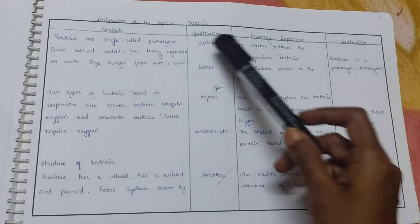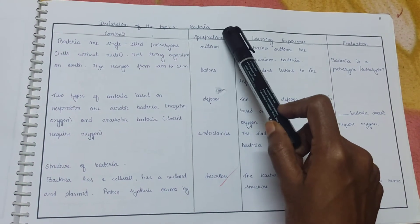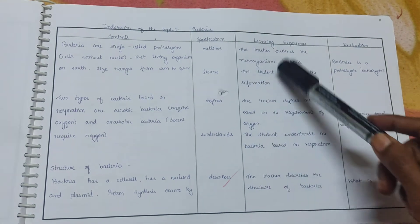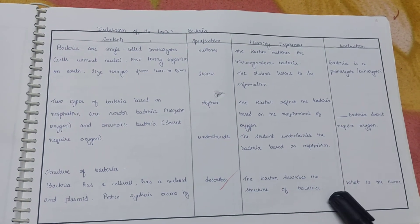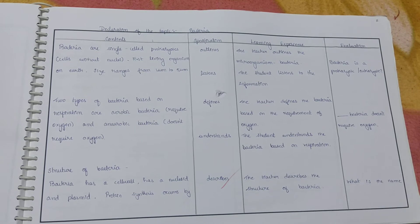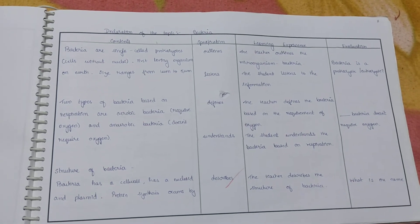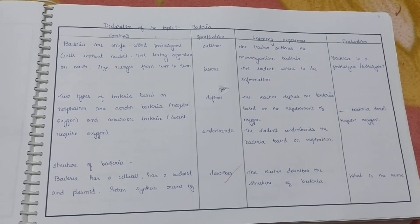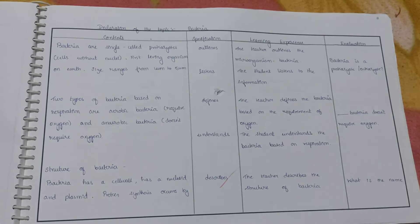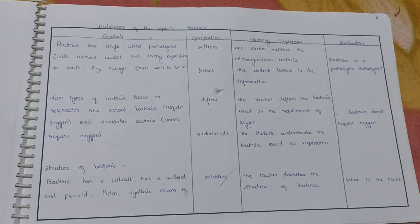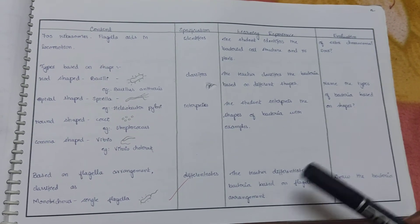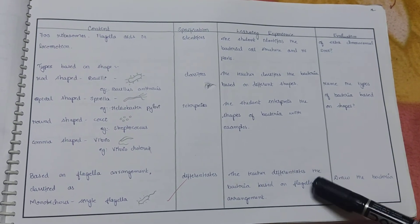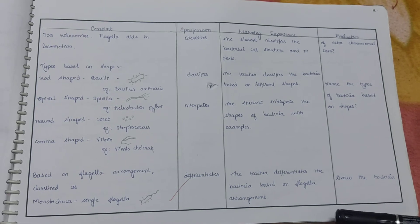For the declaration of the topic, you will have to write it as 'bacteria' — this is very important. Under that you can see my content specification, learning experience, and evaluation. This is the next page of the declaration of the topic.